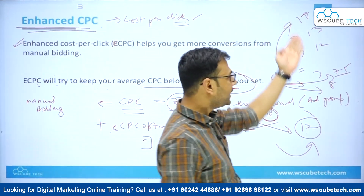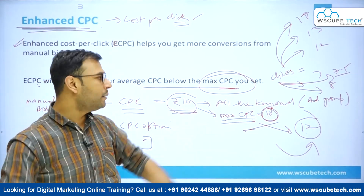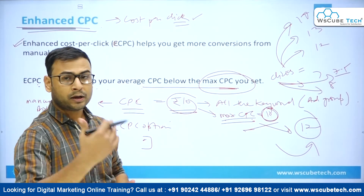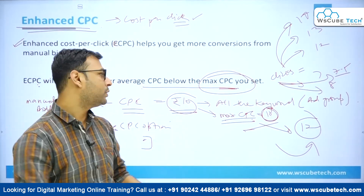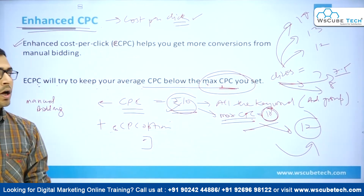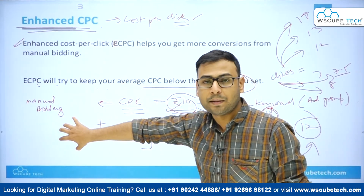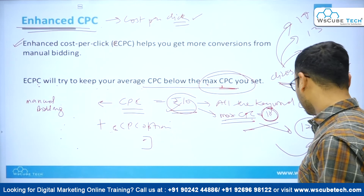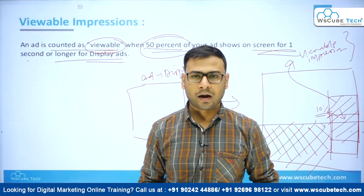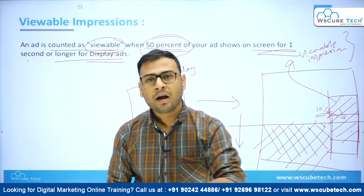When you take the average of all these clicks and their associated costs, that average will be somewhere around the maximum CPC you originally set — in this case rupees 10. We cannot say 100% that it will be less than that, but it will be somewhere around that figure. This is the benefit of enhanced CPC. We also discussed viewable impressions, which you will come across while running video campaigns or display campaigns in Google Ads. That's it for this video.